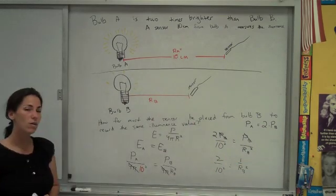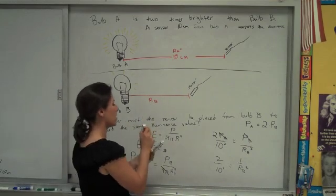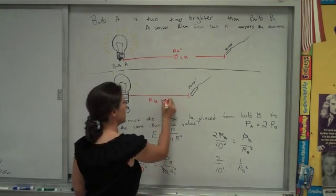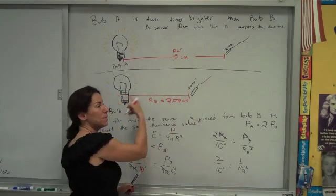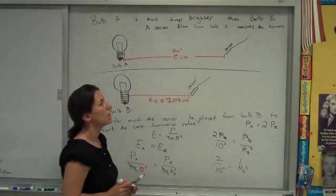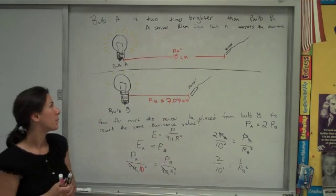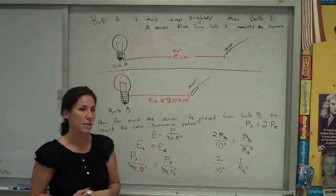And when you finally solve it out for this distance, you're going to end up with 7.07 centimeters. So as expected, it is closer to this dimmer bulb to get the same illuminance as it was getting from this bulb when it was 10 centimeters away.